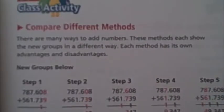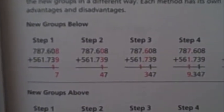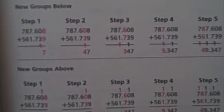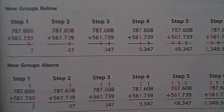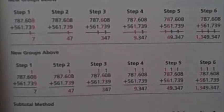To accomplish some of these goals in this unit, they are introduced to different methods of adding numbers and subtracting numbers, looking at new groups and ungroupings. This example you're seeing now is new groups below, new groups above, and the subtotal method.